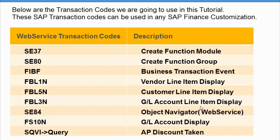FBL3N is the GL account line item display — a finance transaction that every accountant will be using. SE84 is the object navigator where you can work with web services and similar things. FS10N is the GL account balance, another transaction that accounting uses heavily.